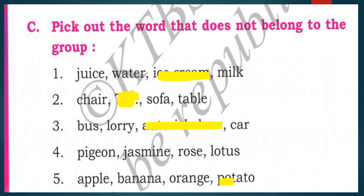Fourth group: pigeon, jasmine, rose, lotus. The odd one out is pigeon, because pigeon is a bird while jasmine, rose, and lotus are flowers. Fifth group: apple, banana, orange, potato. The odd one out is potato, because potato is a vegetable and the others are fruits.